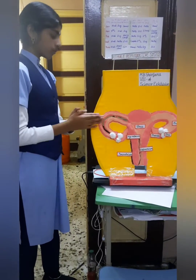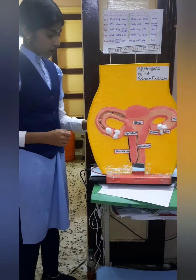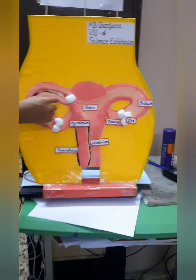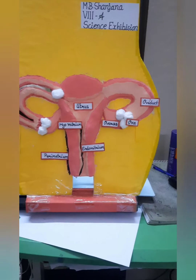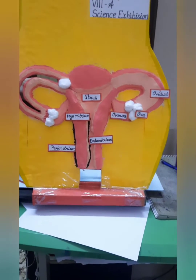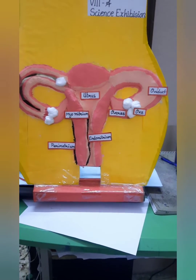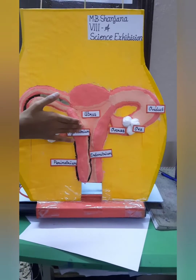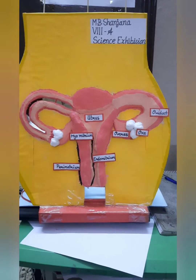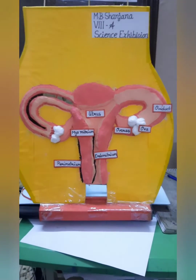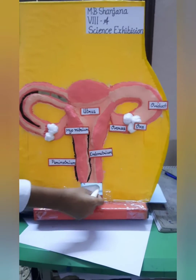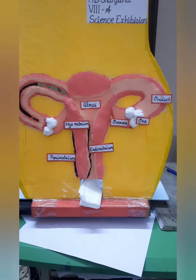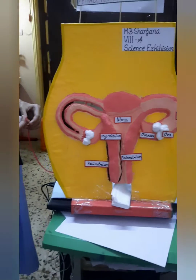When the ovum travels from the ovary to the uterus and gets fertilized, it results in pregnancy. But if it does not get fertilized, the ovum enters the uterus without being fertilized, and this results in menstruation — there will be bleeding.